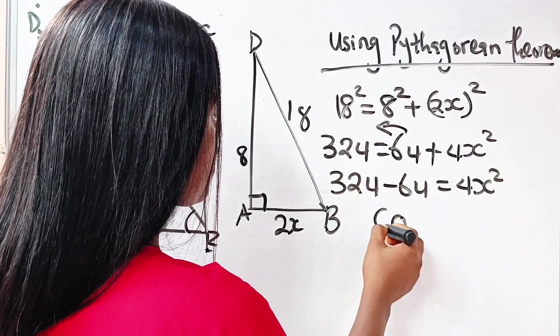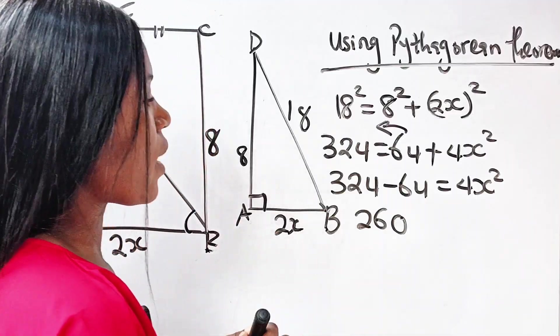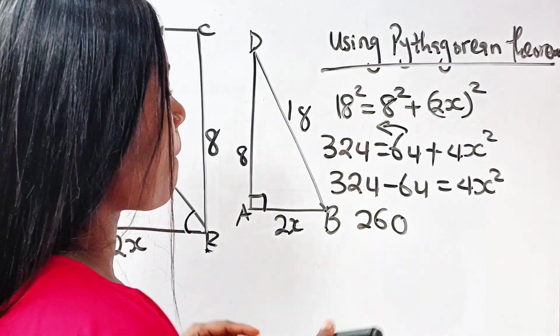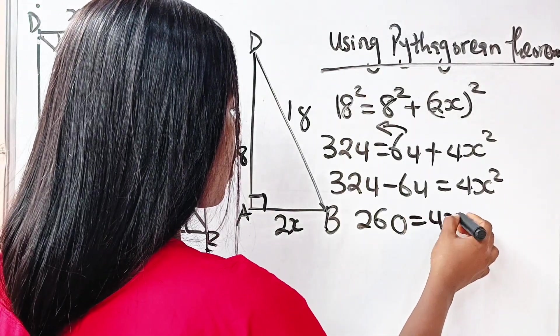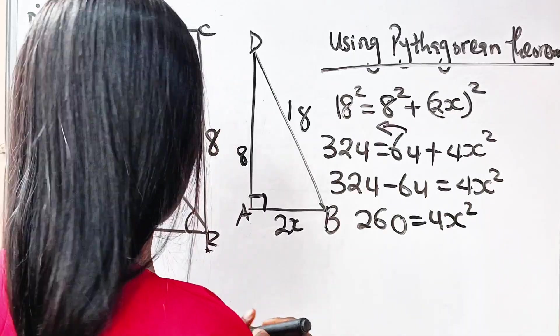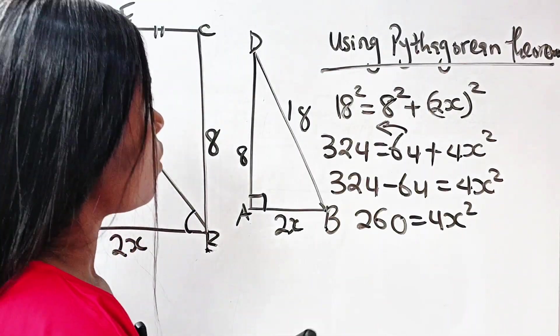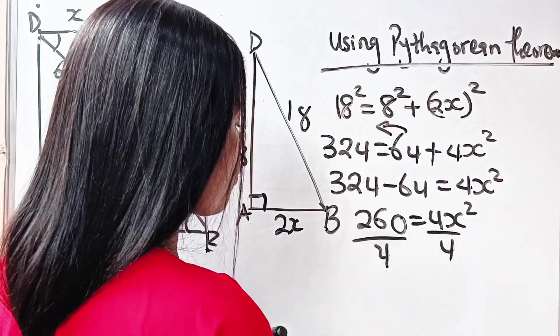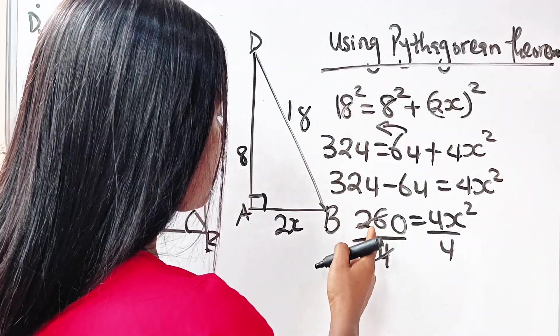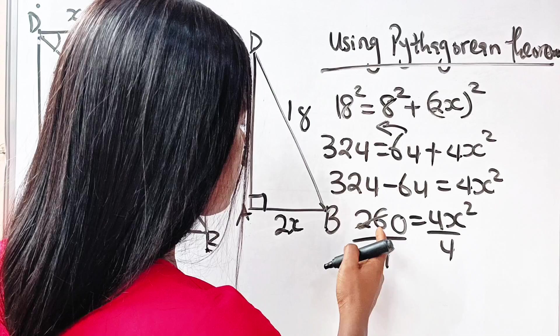Now let's divide both sides by 4. If we do that, we have divided by 4, divided by 4.